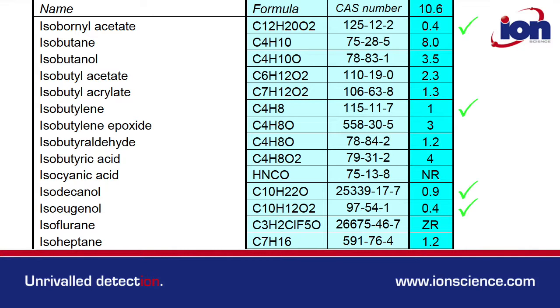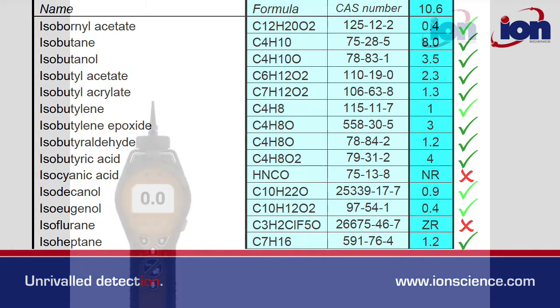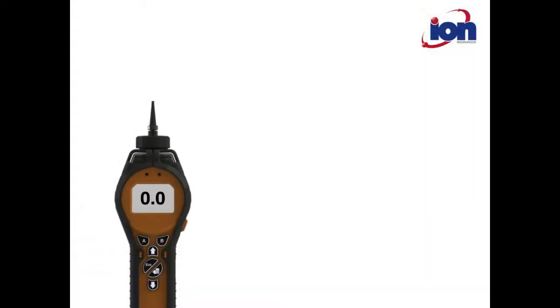Compared to isobutylene, gases with response factors lower than one are more detectable, and gases with higher response factors are less so. Some VOCs are undetectable.